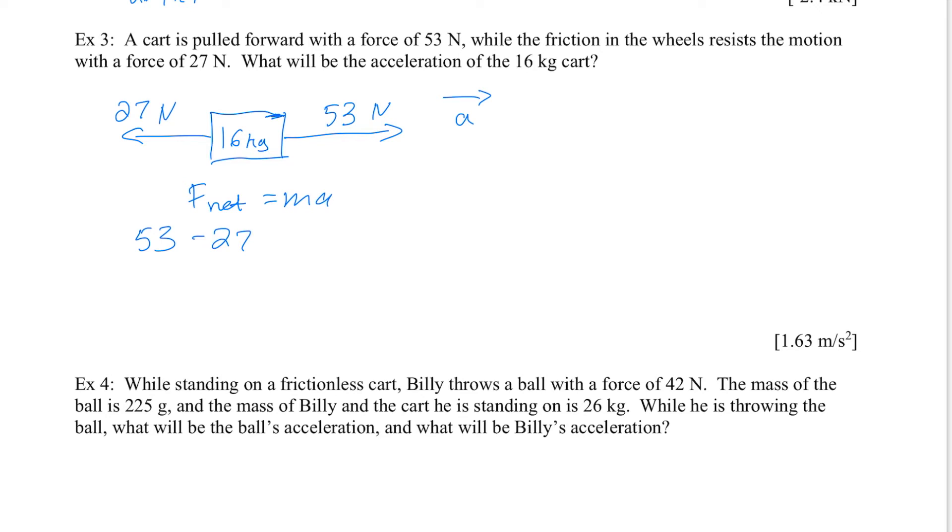And going against it is the 27 newtons. And so that's the overall force altogether. The net force is 53 trying to pull it to the right, which is being reduced by 27, which is trying to pull back the other way. And that's equal to 16a. So 53 minus 27 is 26, equals 16a. A is equal to 26 divided by 16, which is 1.63. And because I use the standard units of newtons and kilograms, I know that my answer is going to be in the standard units of meters per second squared.